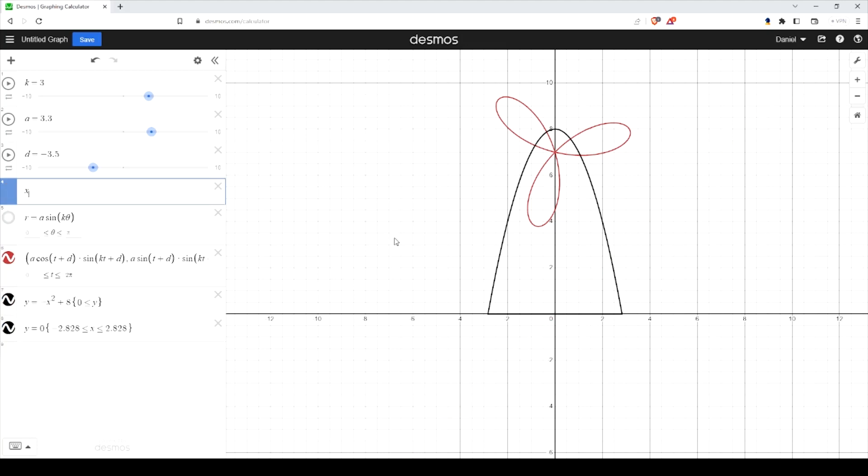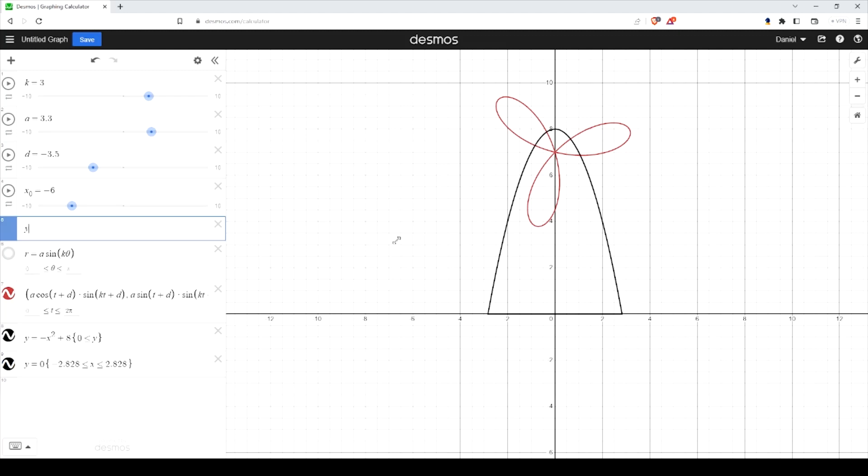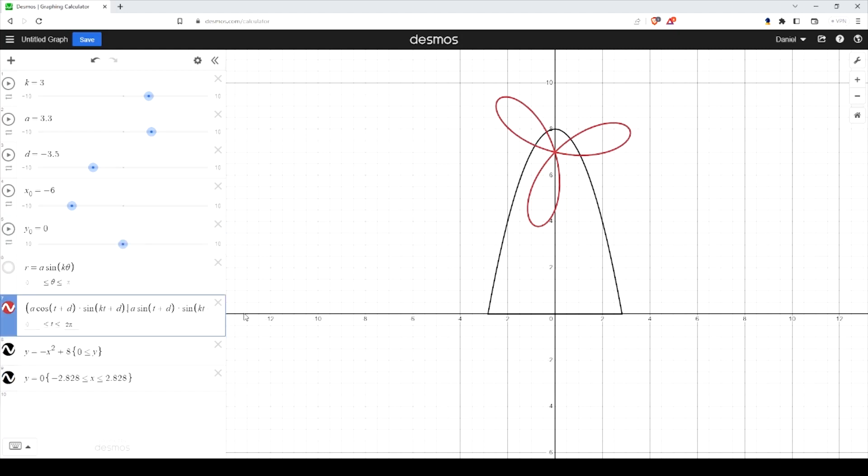I'm going to call this x zero, let's put this at minus six, and I'll put zero, or y zero, at zero. So what that allows you to do is now add x sub zero to this one here.